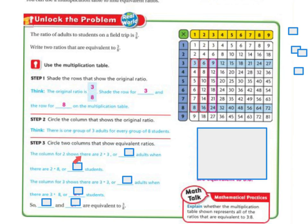Column 2 shows that there are 2 times 3, which is 6 adults. And then, there are 2 times 8, or 16 adults. Column 3 shows that there are 3 times 3, or 9 adults. And there are 3 times 8, or 24 adults. So, 6 over 16 is equivalent to 9 over 24.